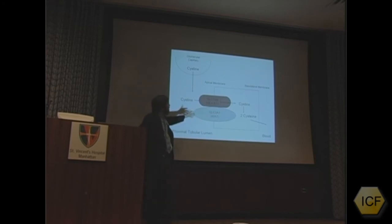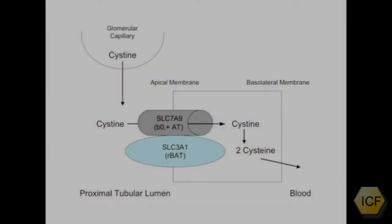This is the cystine transporter. We now know that the cystine transporter consists of two parts. One part of it could be thought of as a pore, and the cystine moves through it.